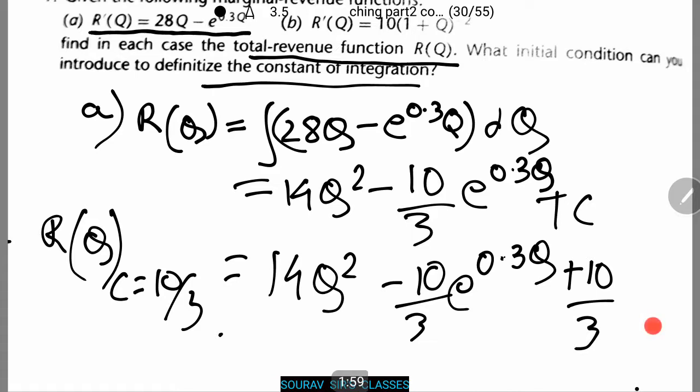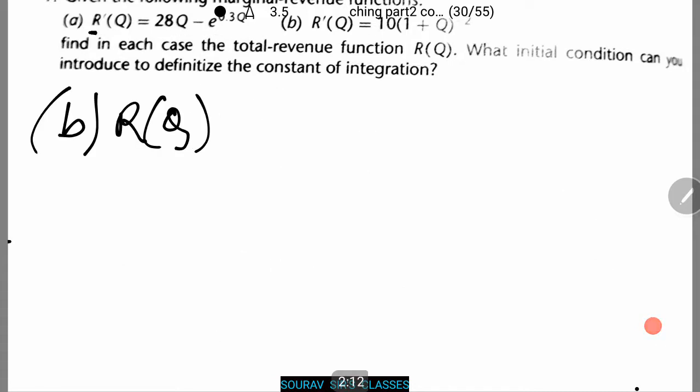Now we are going to be doing b. Over here we are given another revenue function that is r'(Q) equals 10(1 + Q). Let's do it in a similar manner. R(Q) equals integration of 10 into (1 + Q) to the power minus 2 dQ which comes to